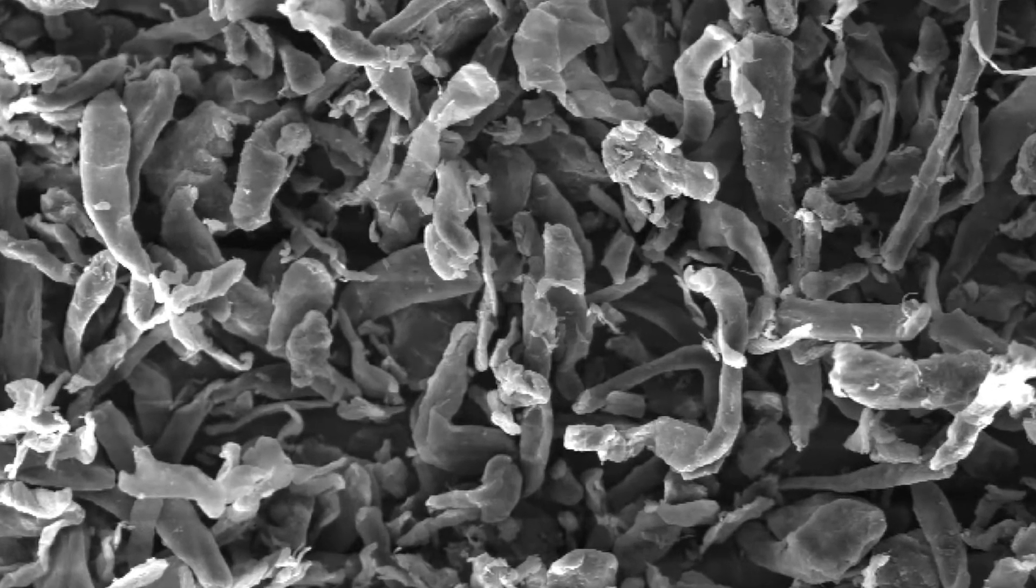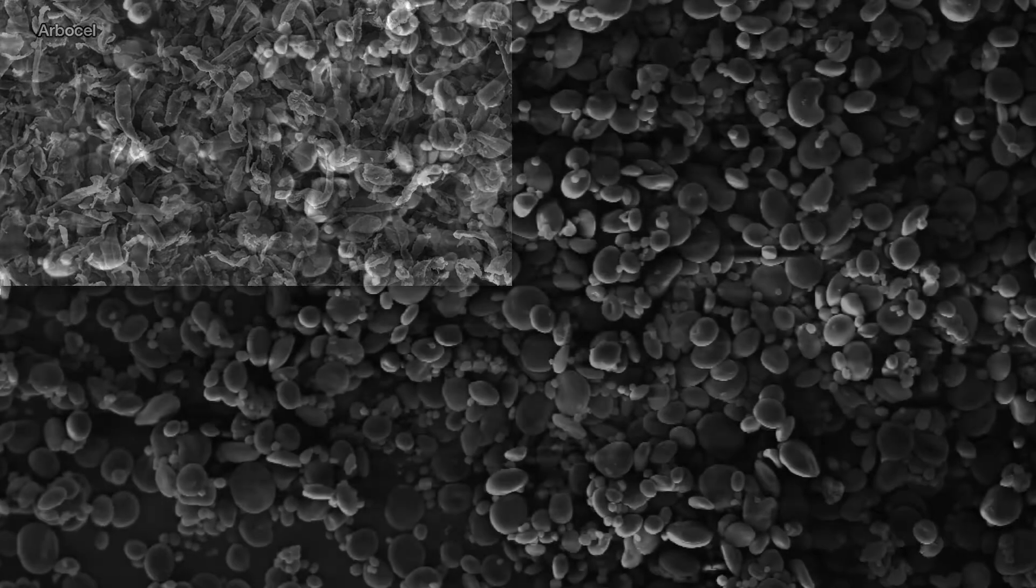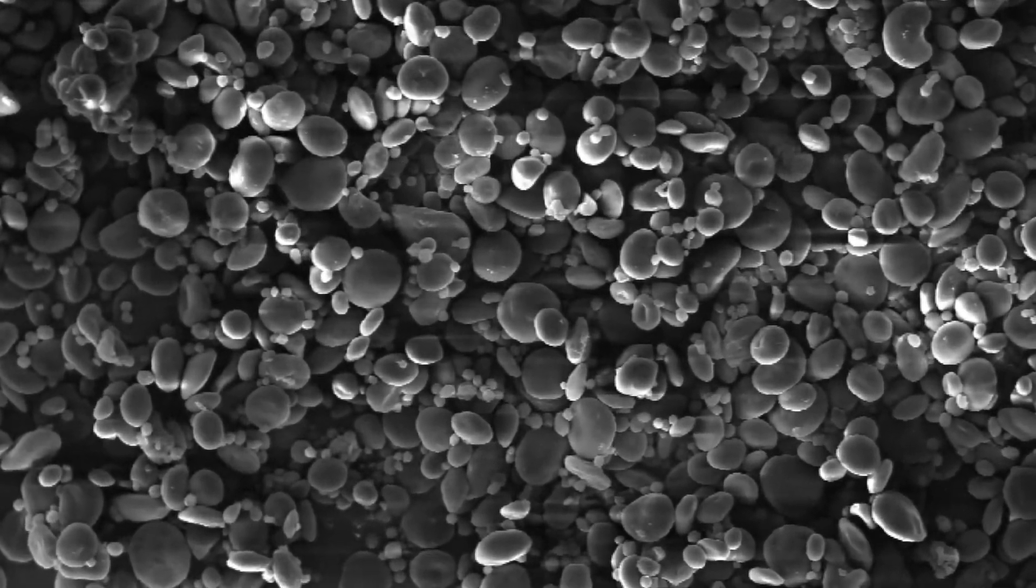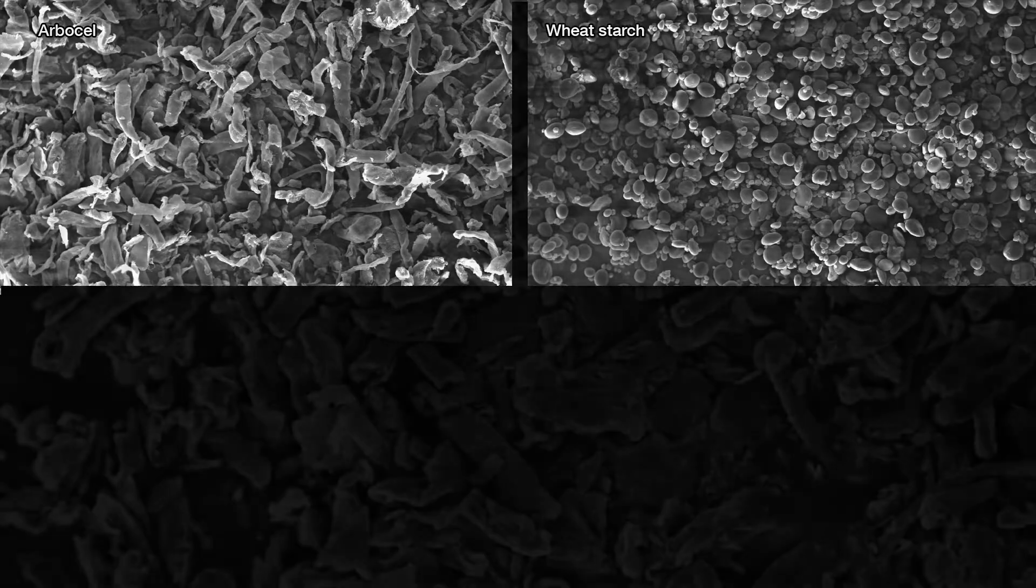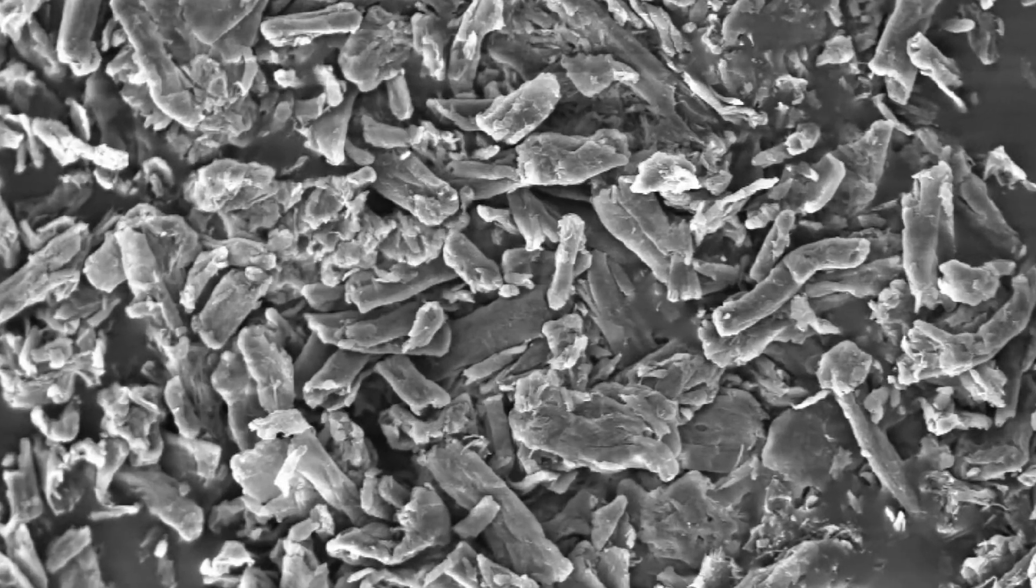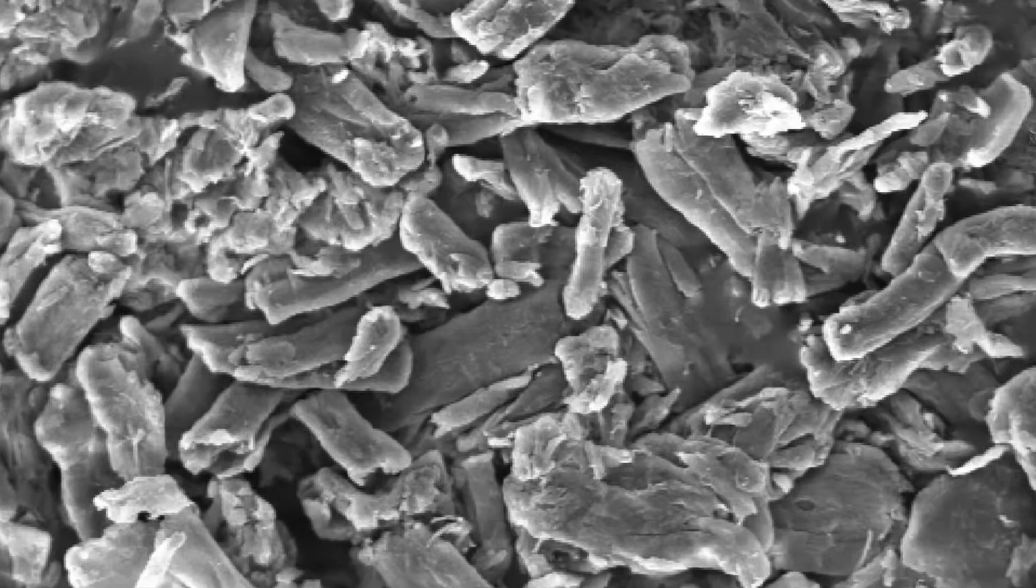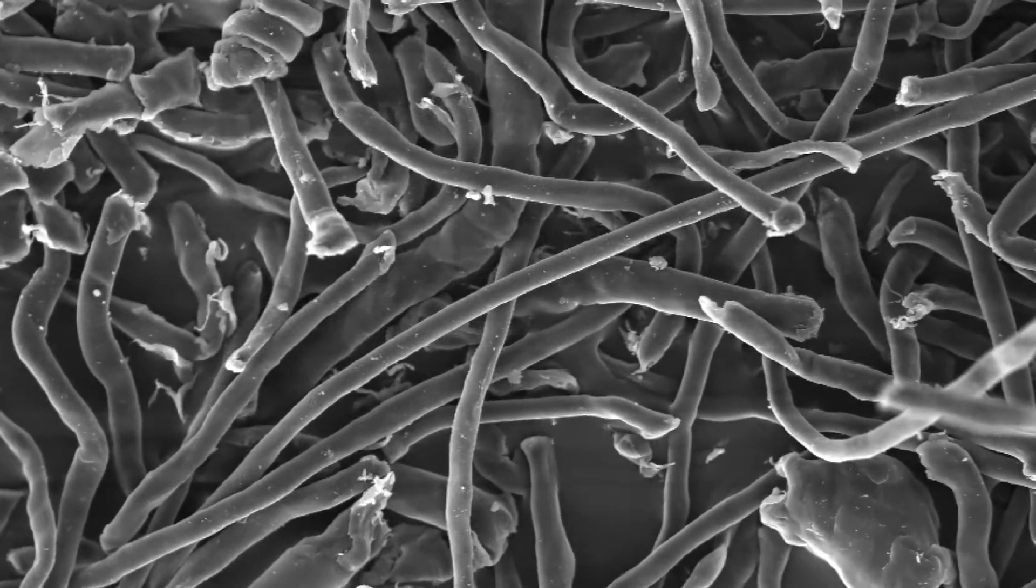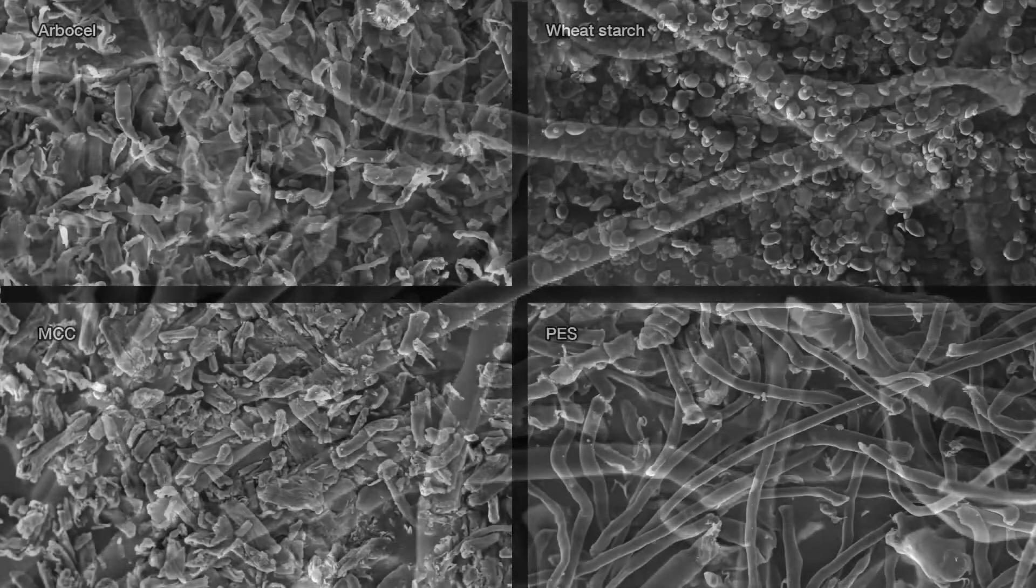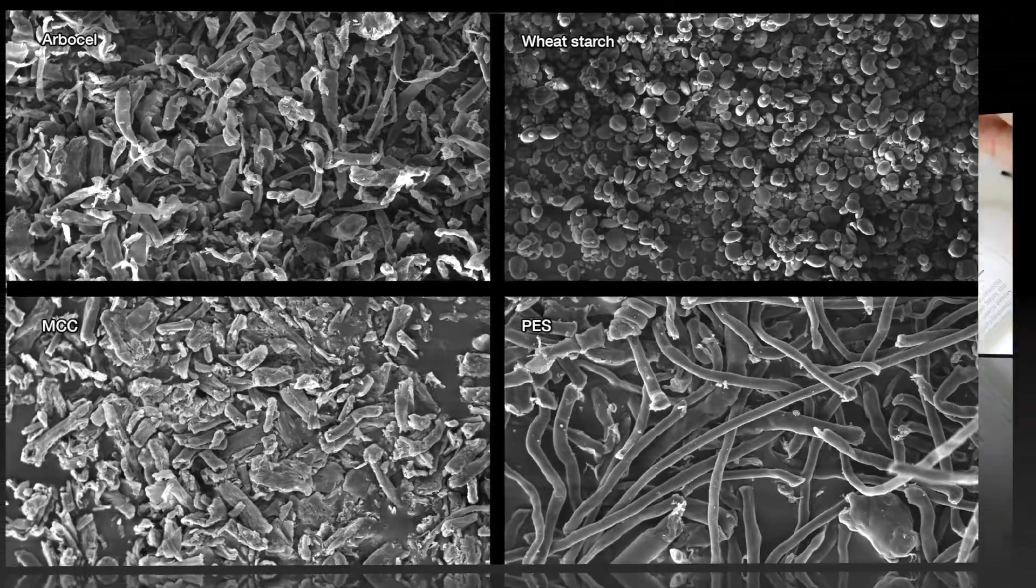The long fibers of the Arbicels gently clean nearly all surfaces. The ovate and lenticular particles of the wheat starch help to clean even persistent pollution. On the other hand, the microcrystalline cellulose is not recommended for sensitive surfaces due to its rigid and sharp particles.